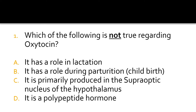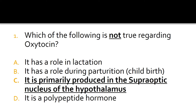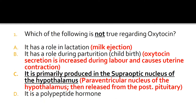The correct answer is option C. Option C is not true; the other three are true. Oxytocin is primarily produced in the paraventricular nucleus of the hypothalamus.